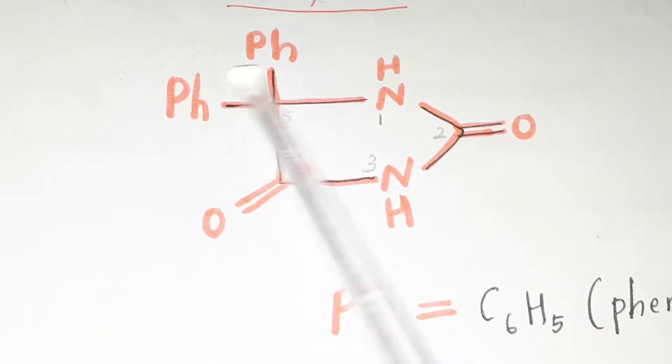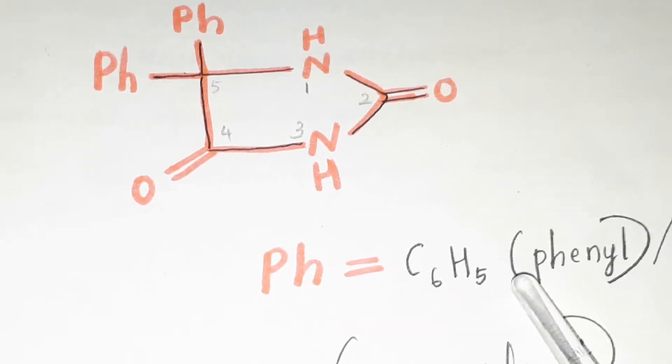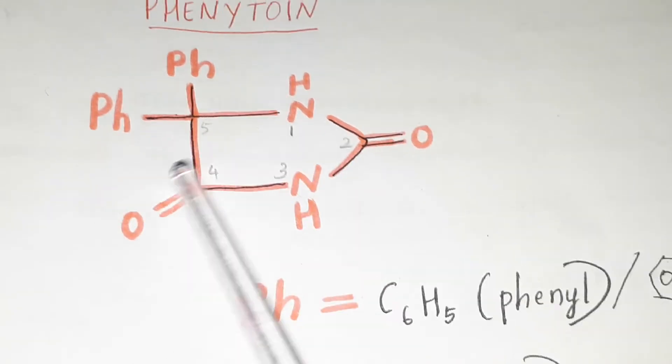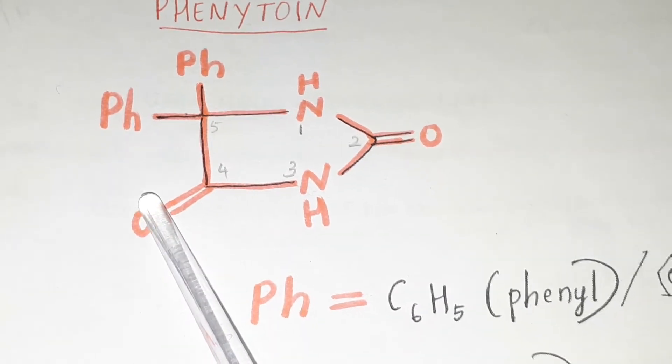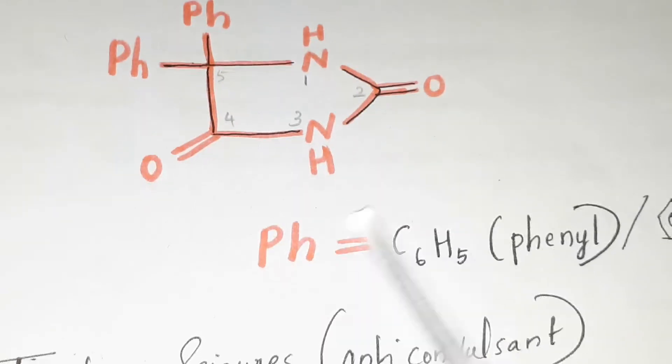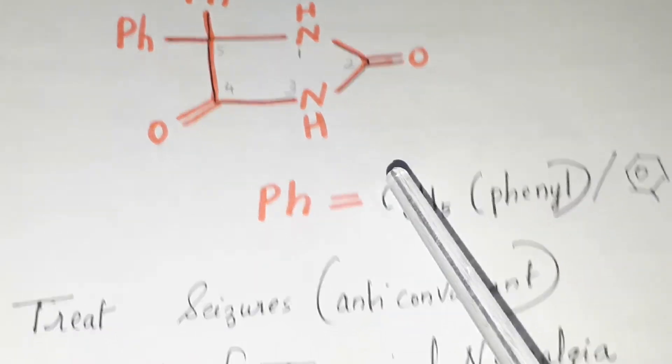two phenyl groups. Ph is for phenyl, or C6H5, the phenyl ring - you can write it instead of Ph. There are two double bonds in the second and fourth positions of the imidazolidin ring.